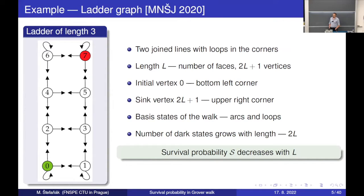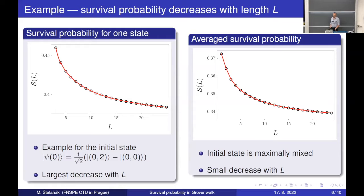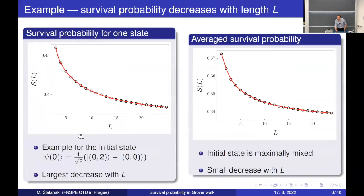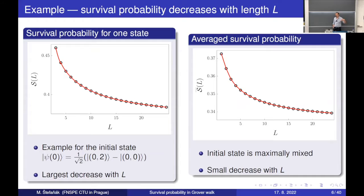As the length of the ladder increases, so does the number of dark states. But it turns out that for some initial states the survival probability actually decreases with length — so the longer the ladder, the more likely the walker ends up in the sink. Here are numerical simulations for one particular initial state where the walker starts at vertex zero on the arc going up and on the loop. The survival probability decreases with length. For an average initial state such as a maximally mixed state, the survival probability still decreases with length but the decrease is smaller.